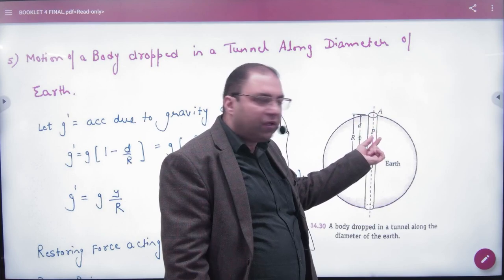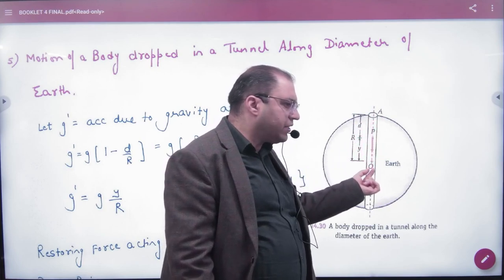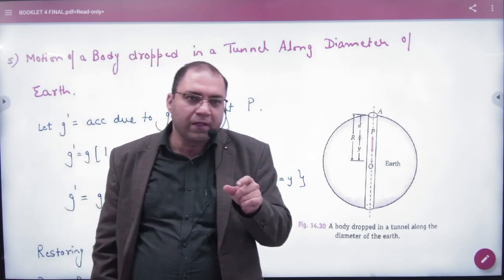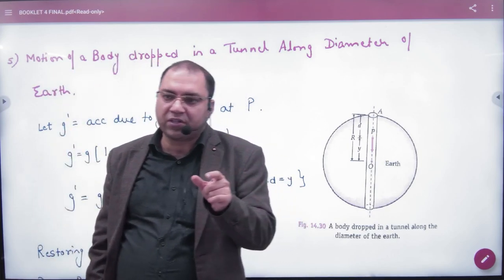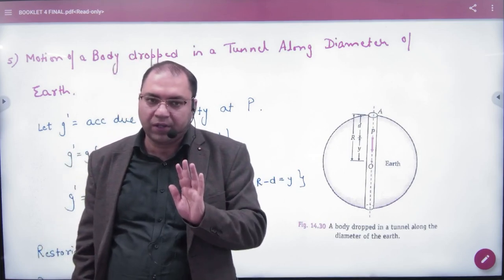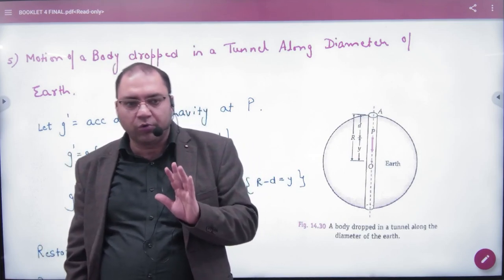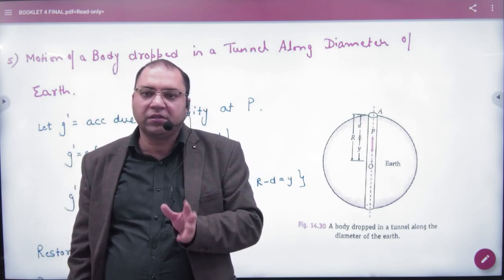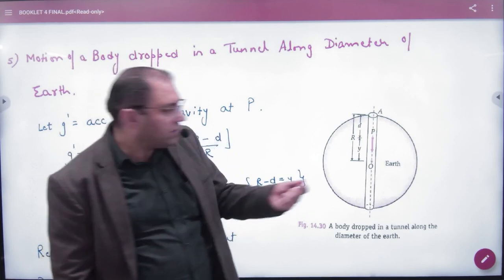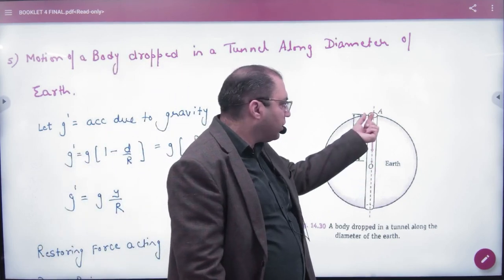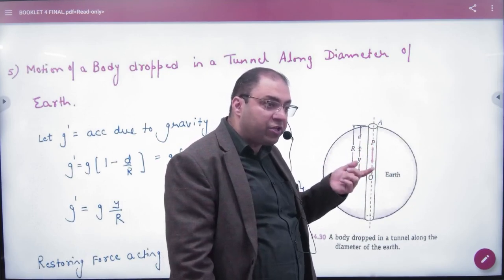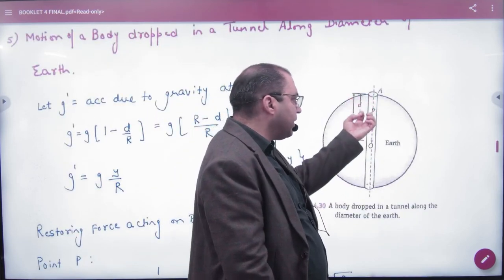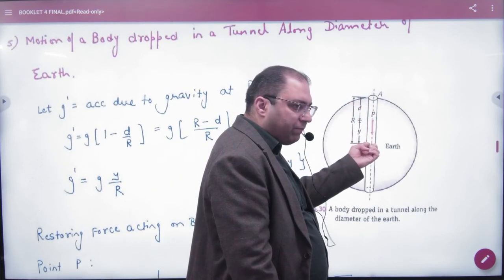It will go down toward the center. Why will it not go to the other end? Because one of the body will move toward the center of the earth. If this is the center of the earth, then think about it. The weight is also changed. Acceleration due to gravity is changed. But in any case, the ball will move toward the center.